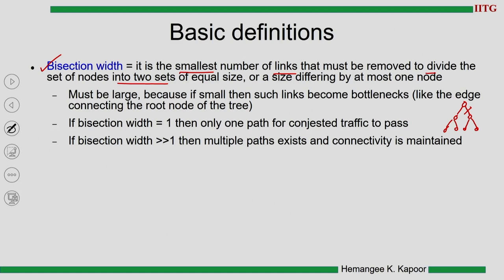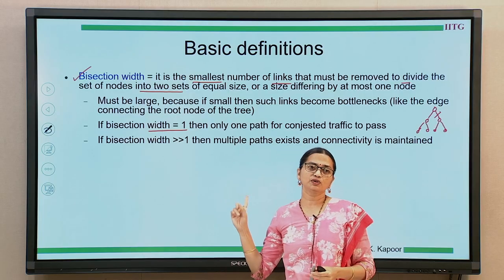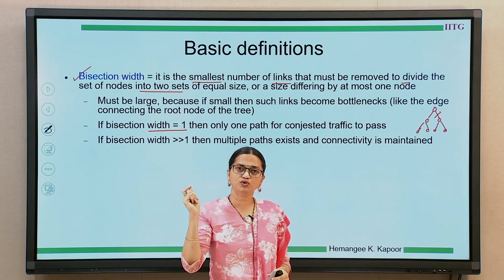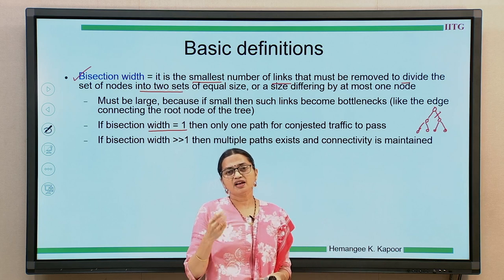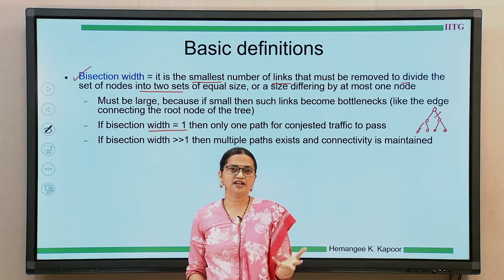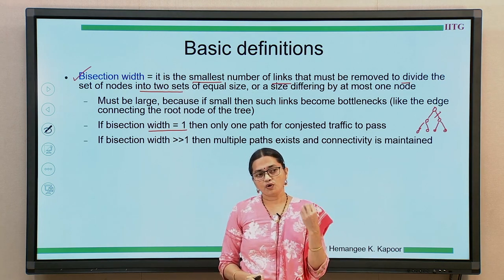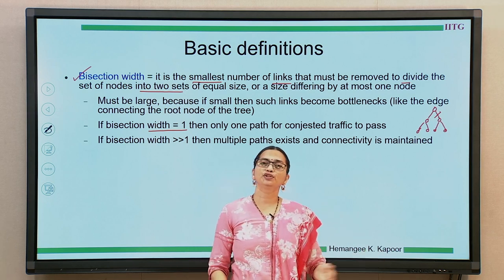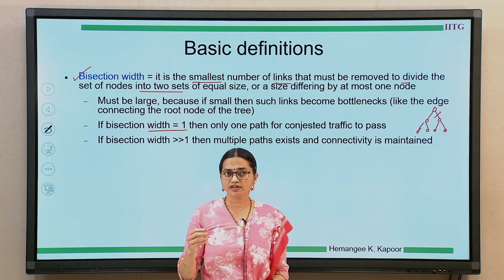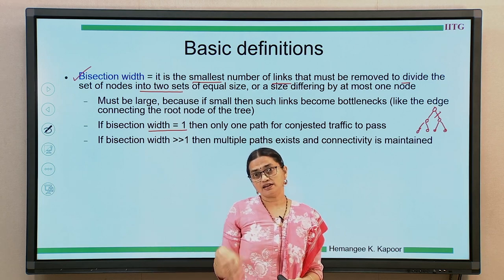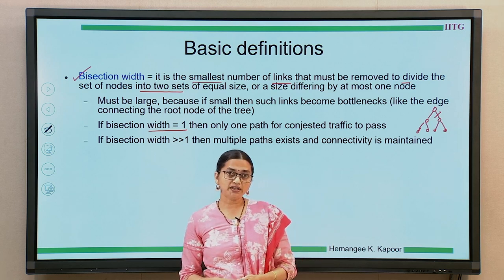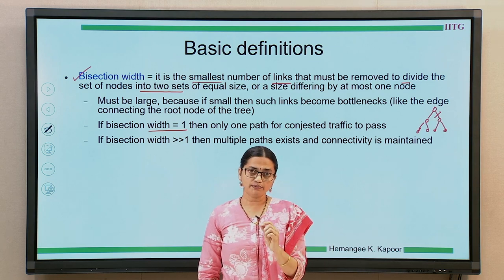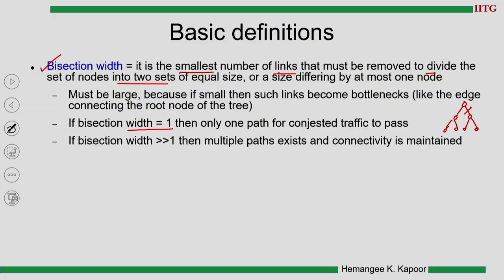A bisection width of 1 means that if that single link fails, the network breaks into two partitions and communication between them is lost. A single link failure is not a rare condition, so this is not good. What we desire is that the bisection width should be as large as possible — not 1, but much more — because the chance of multiple links failing simultaneously is lower than the chance of a single link failure. We want to increase the bisection width so that even if a few links fail, we can still maintain connectivity across all nodes. So the bisection width should be much greater than 1, providing multiple paths and maintaining network connectivity.